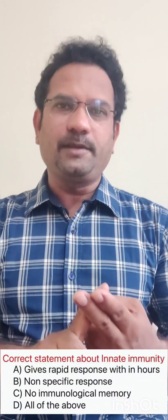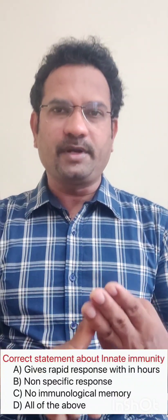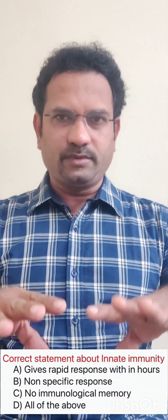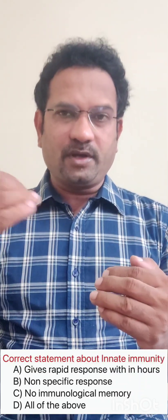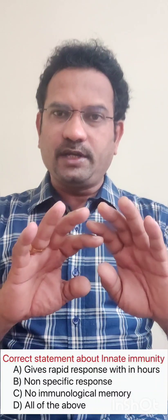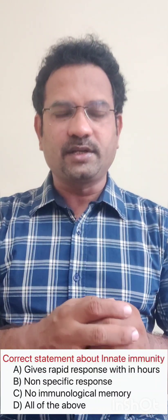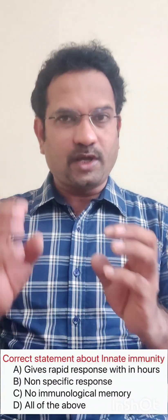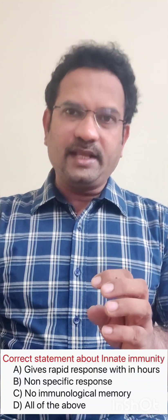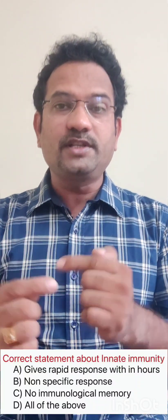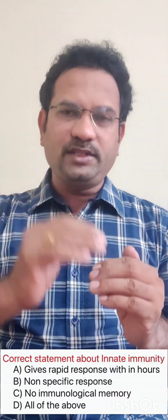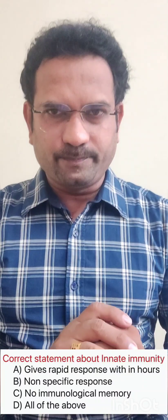So non-specific is also correct for innate immunity. Now the third option is no immunological memory — this is true. That means if you get an infection from a particular organism, next time even if the same organism attacks, the innate immunity response doesn't have any memory and shows the same reaction. Whereas acquired or adaptive immunity remembers the organism through memory cells, and when you get the same infection again, a full-blown immune response attacks that organism. So the third option is also correct for innate immunity. All three are correct, hence the answer is all of the above.